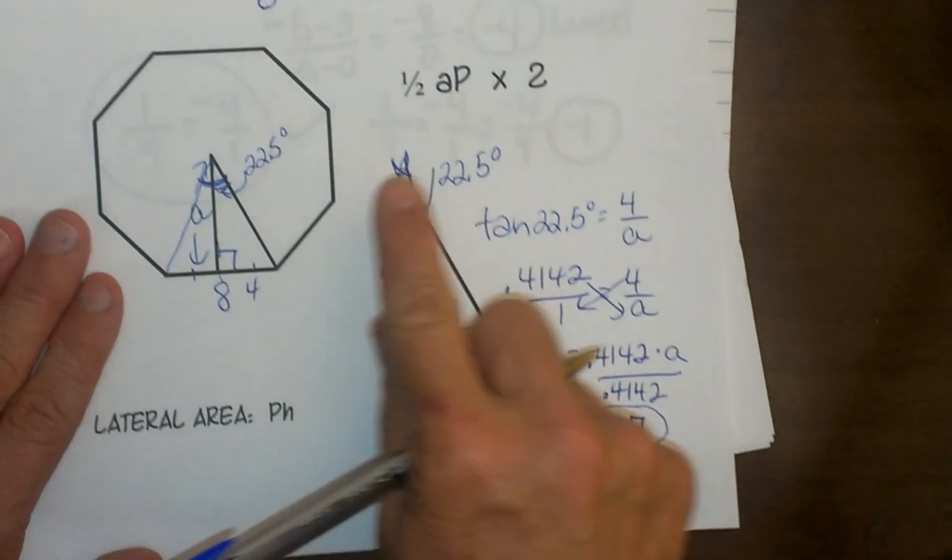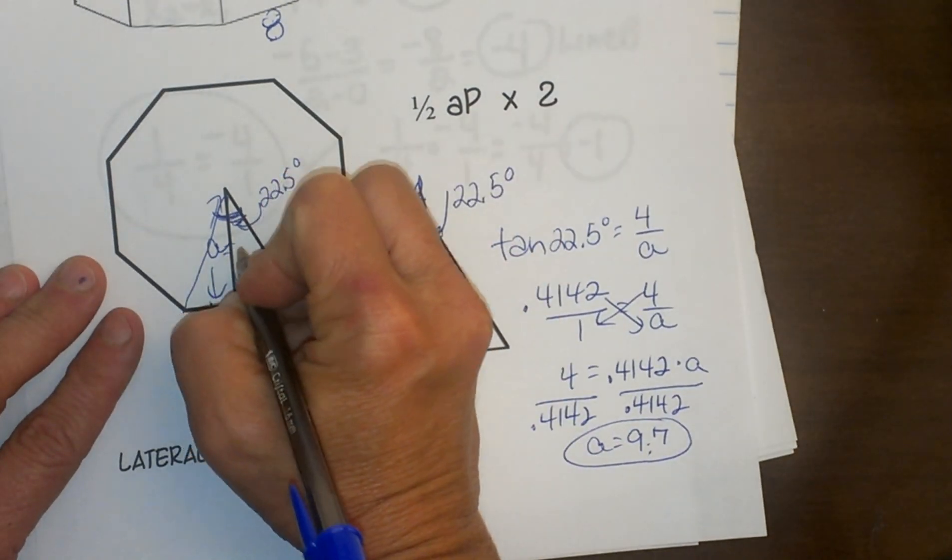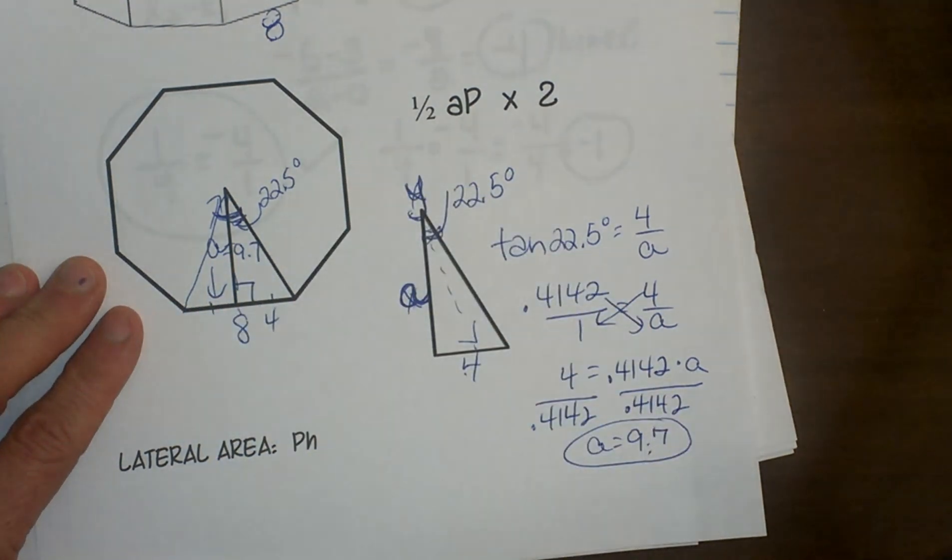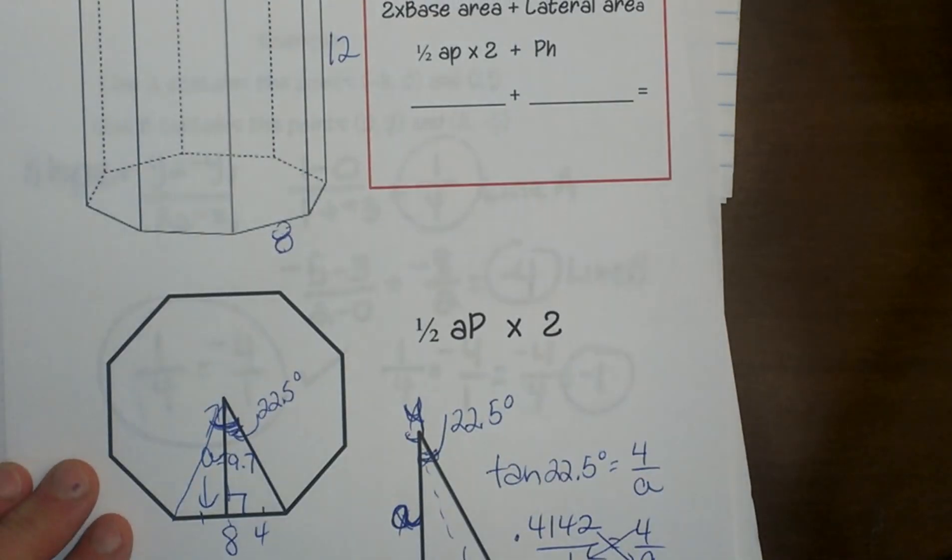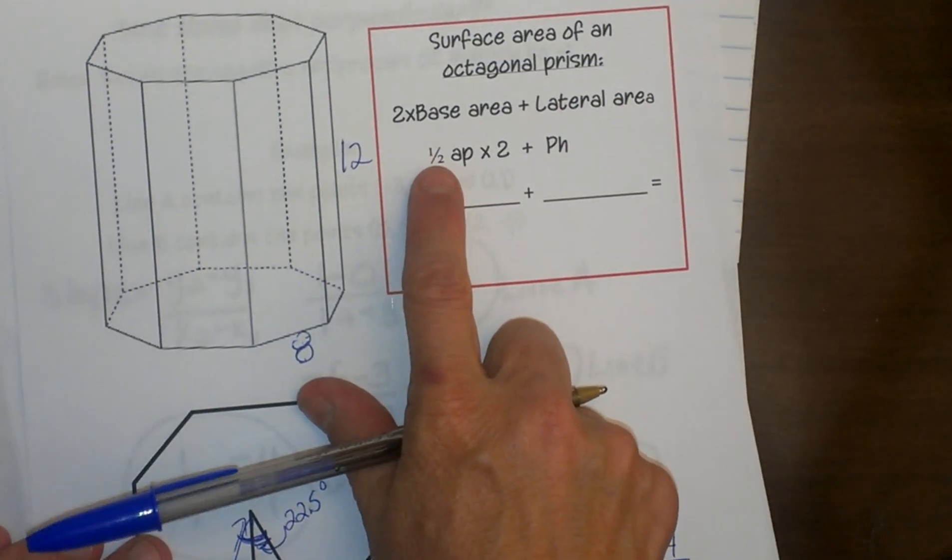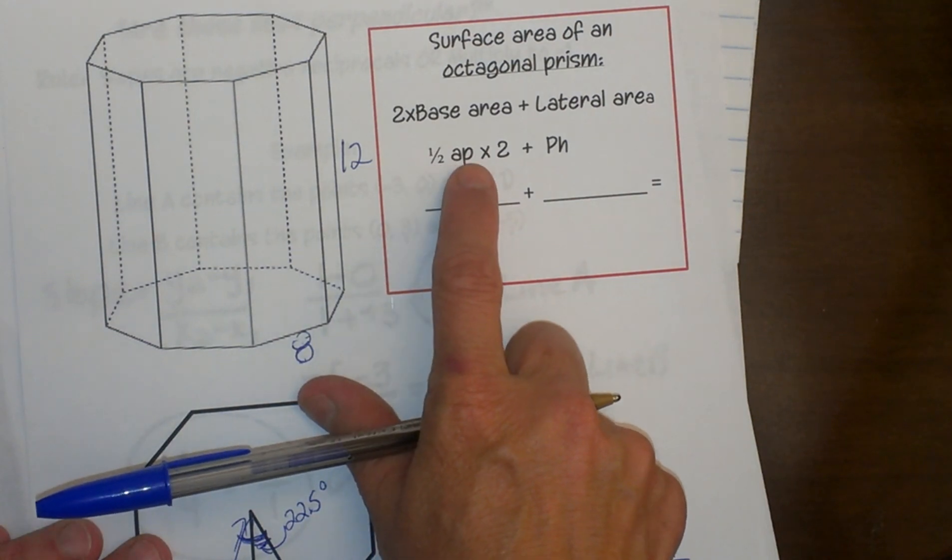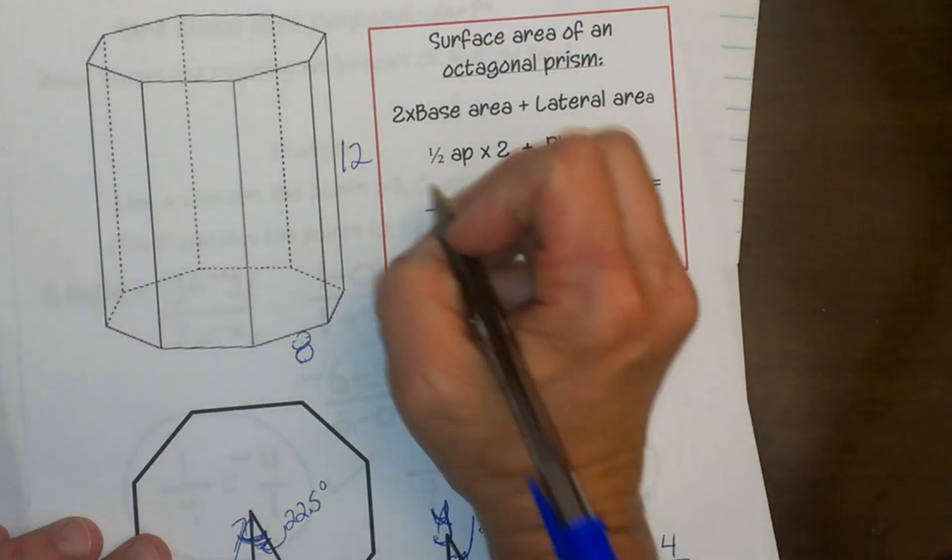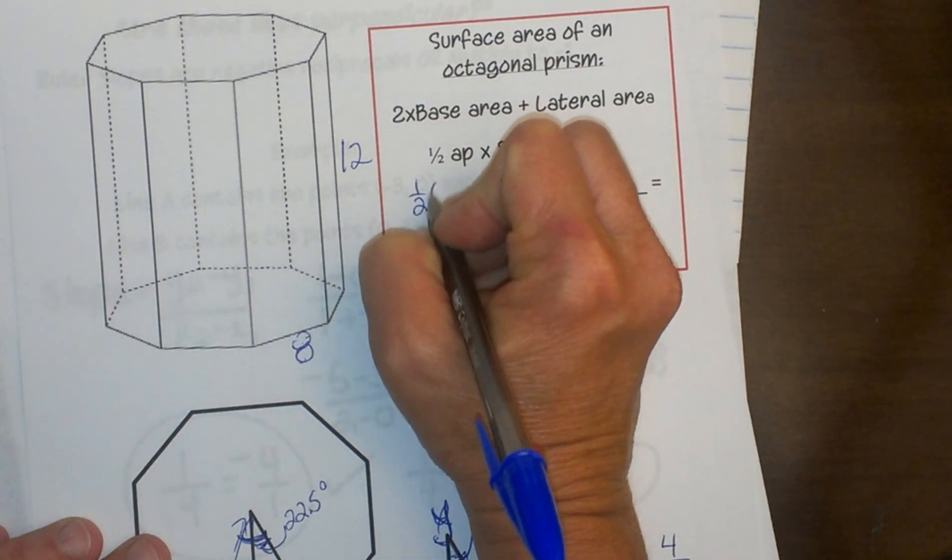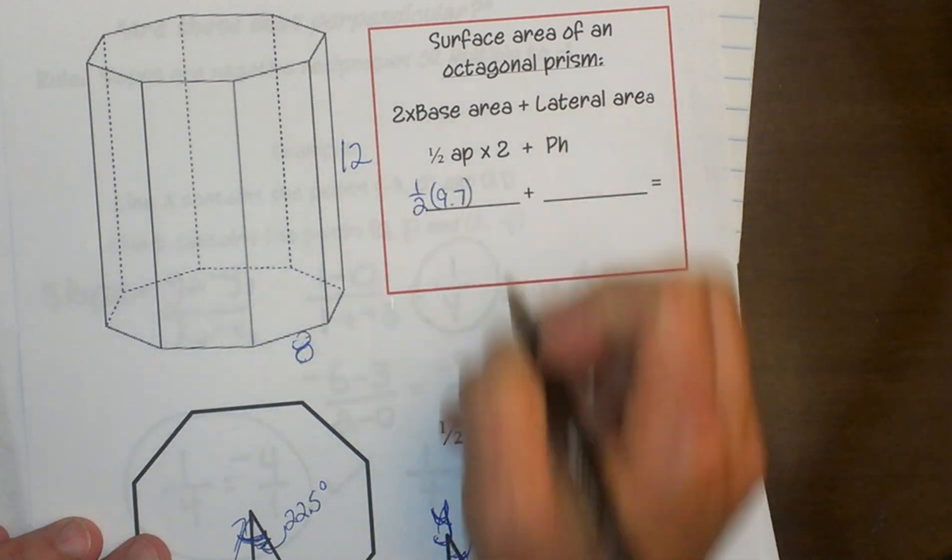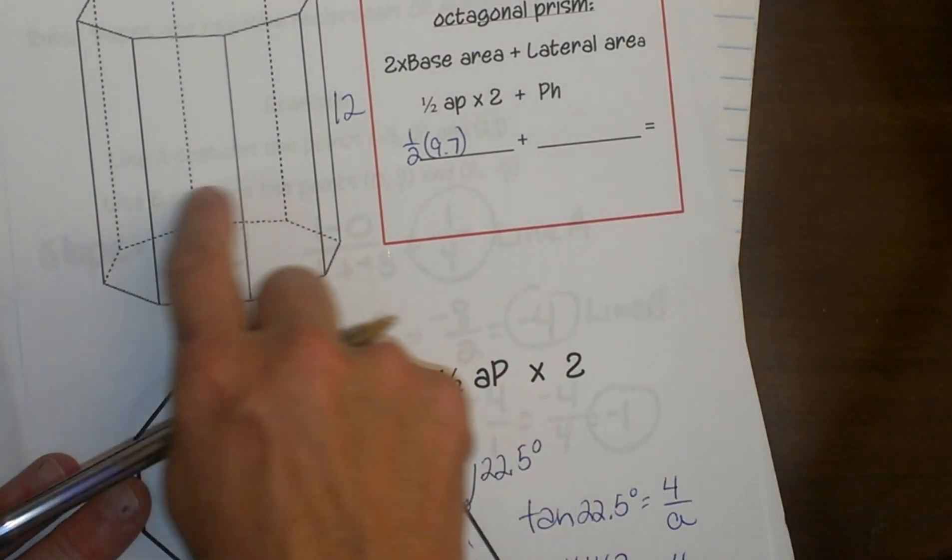Now let's go back and draw that in over here. So that is 9.7. How is that going to help us? Let's go up here and look. Well, we have to do one-half AP where A is the apothem and P is the perimeter.